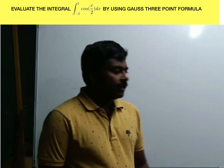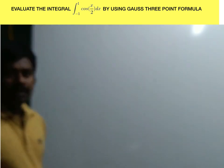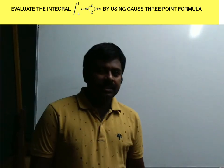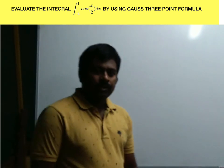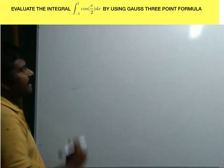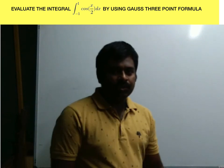Hello everyone, today we are going to solve another problem from Gauss Quadrature. Evaluate the integral from minus 1 to 1 of cos(x/2) dx. In this question, it is clearly given to use the 3-point Gauss Quadrature formula.